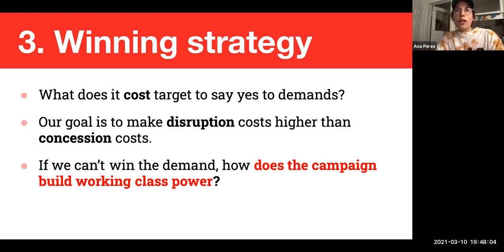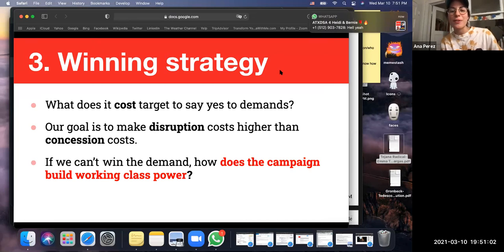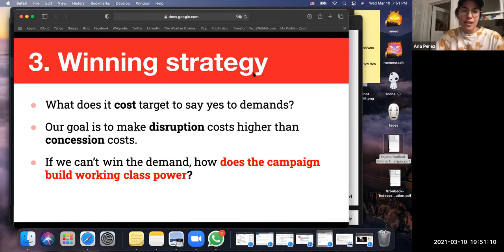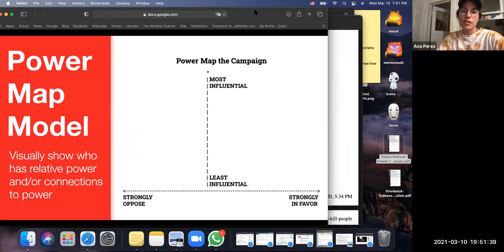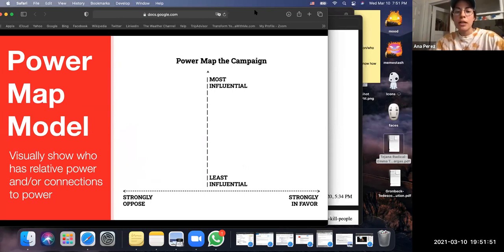How can we make it cost more to ignore us than to say yes to our demands? Maybe it looks like people getting in the street and doing protest actions every weekend — but sometimes that's hard to sustain. When thinking about your campaign and demands, you also have to think about what capacity your organization has, and hopefully you can identify others in the community to work together with. Visualizing the different actors in the universe of whatever campaign you're doing is helpful — it's a visualization tool for power mapping your campaign.